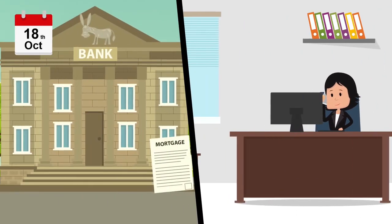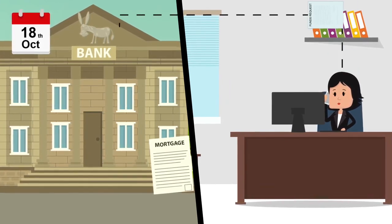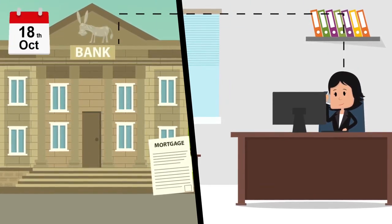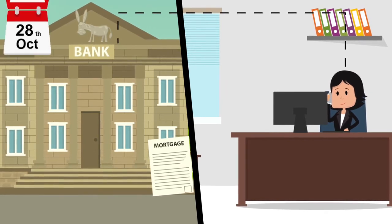The conveyancers still have a lot to do though. The buyer's conveyancer will order money from the mortgage lender, complete final searches and collect any money required from the buyer.